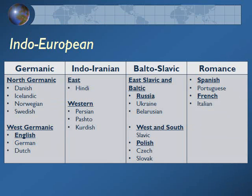Let's dissect some of the language groups found within Indo-European. You have the Germanic group, broken further into North Germanic — Danish, Icelandic, Norwegian, Swedish — and West Germanic, where English falls. English is most closely associated with German and Dutch. Then Indo-Iranian covers India and Iran: in the East you have Hindi, the largest language spoken in India, and in the West, in Iran, you have Persian, Pashto, and Kurdish.